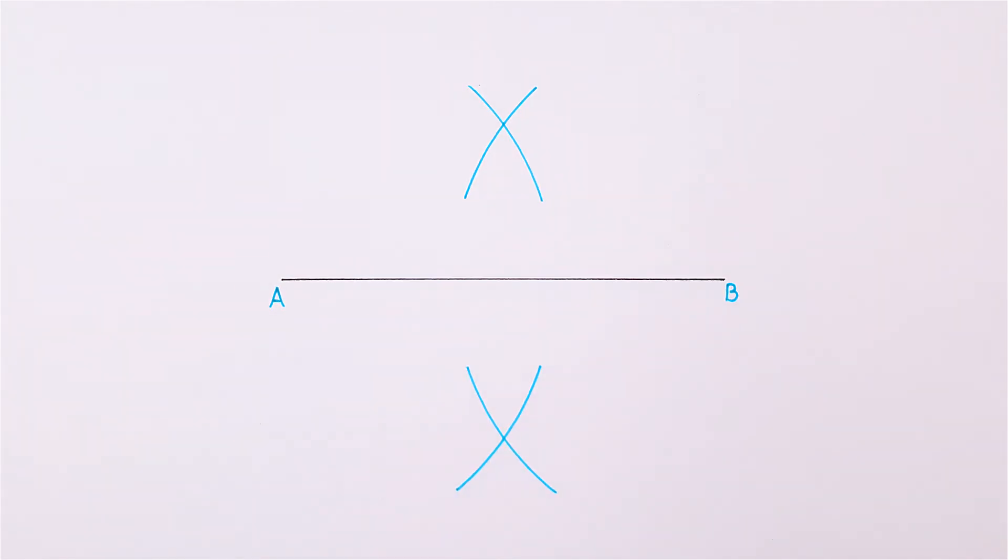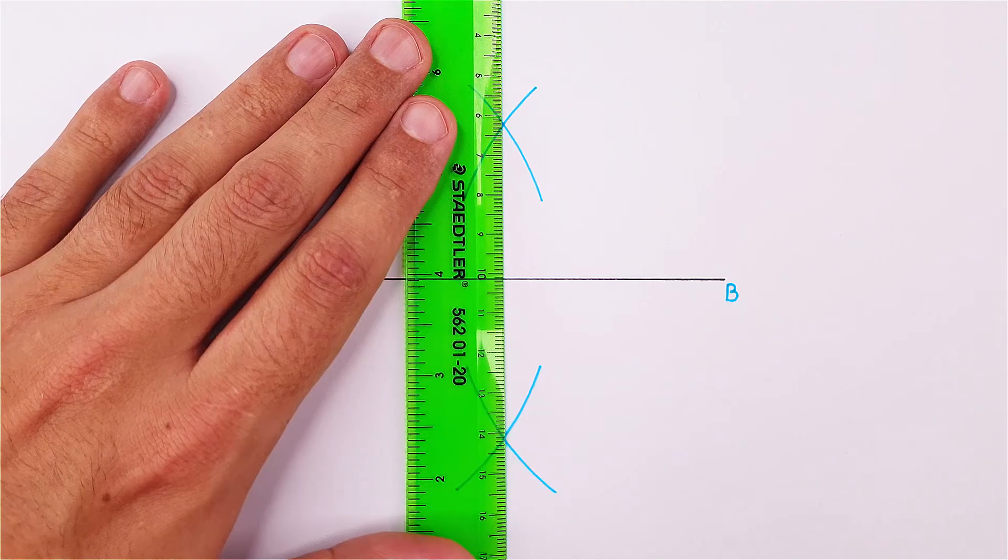You can now place your ruler on the two intersecting points and draw the perpendicular bisector.